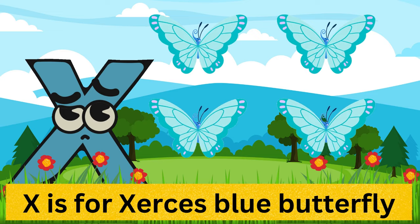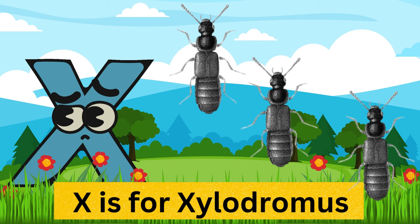X is for Xursa's blue butterfly. X is for xylophagus insect. X is for xylodromus.